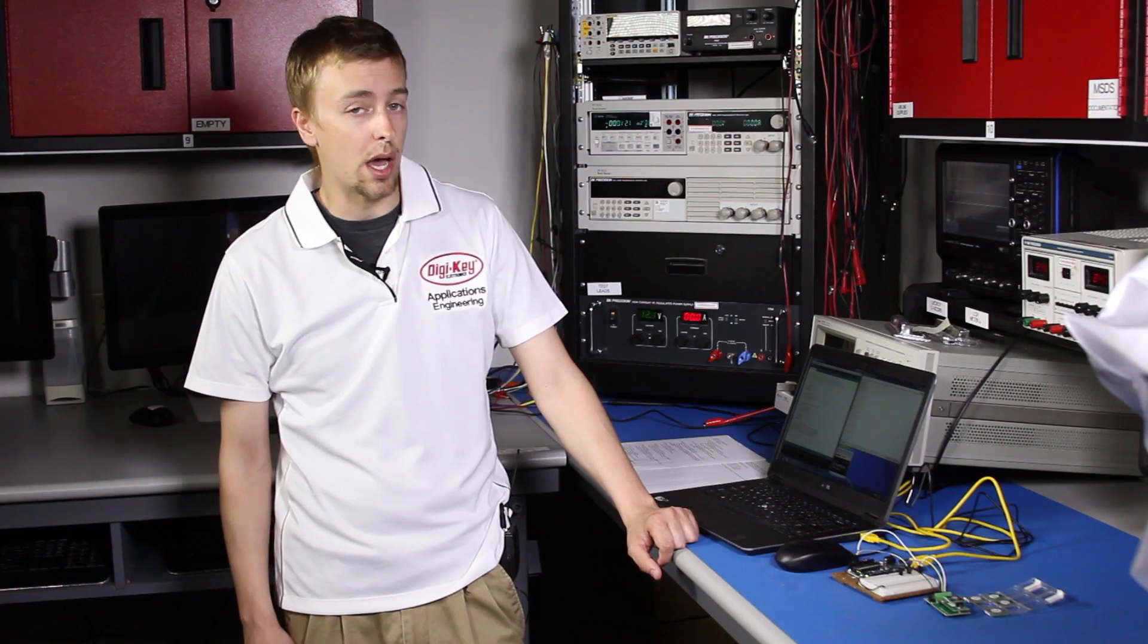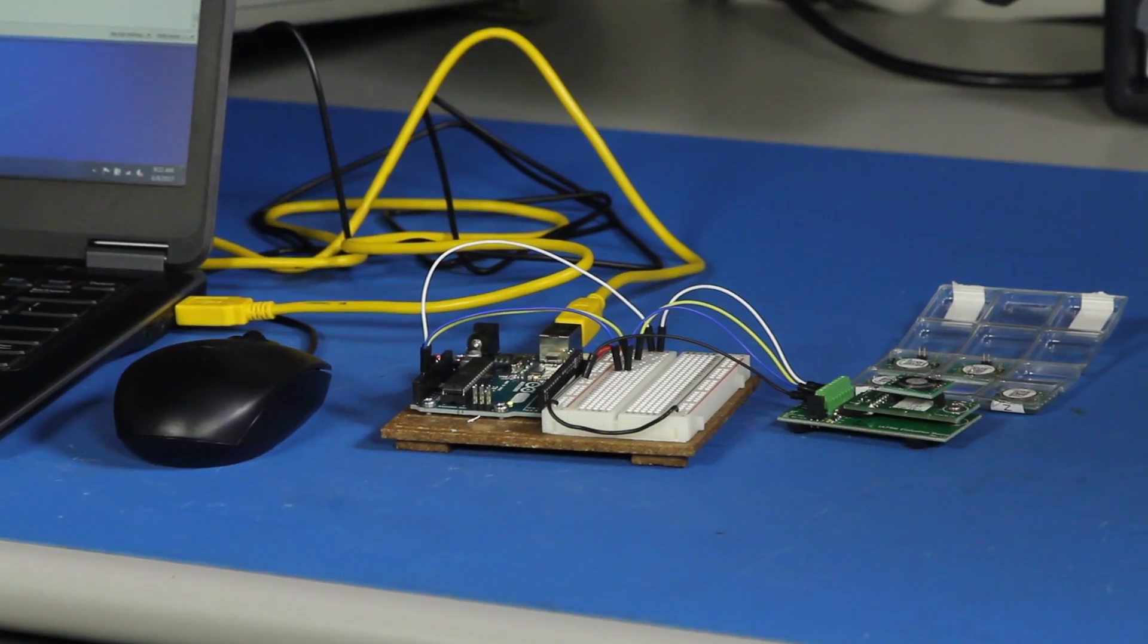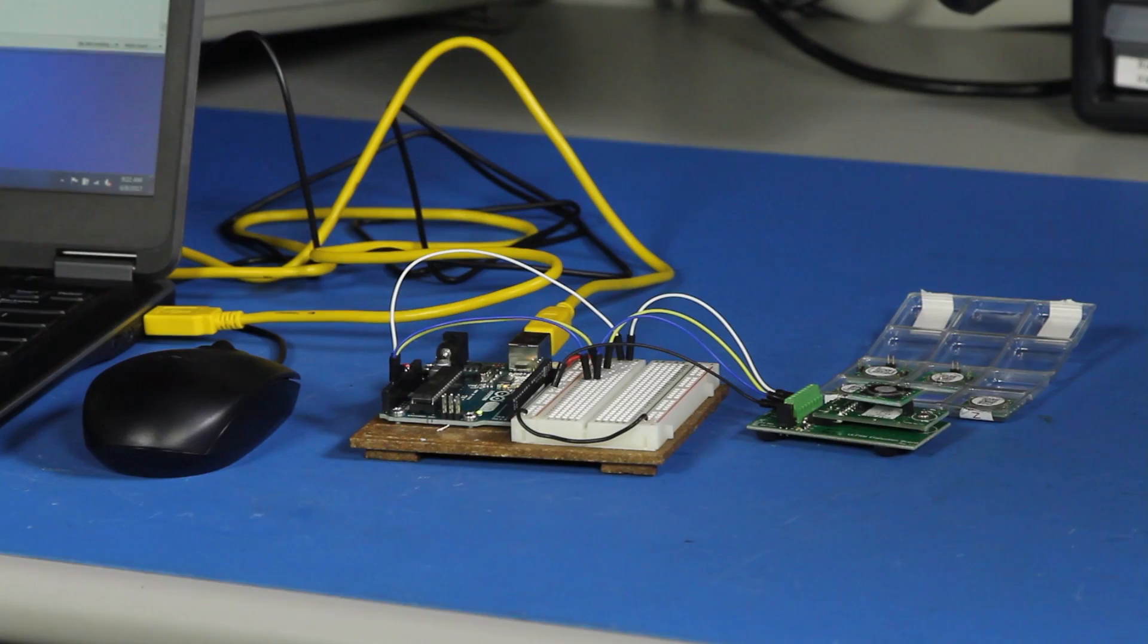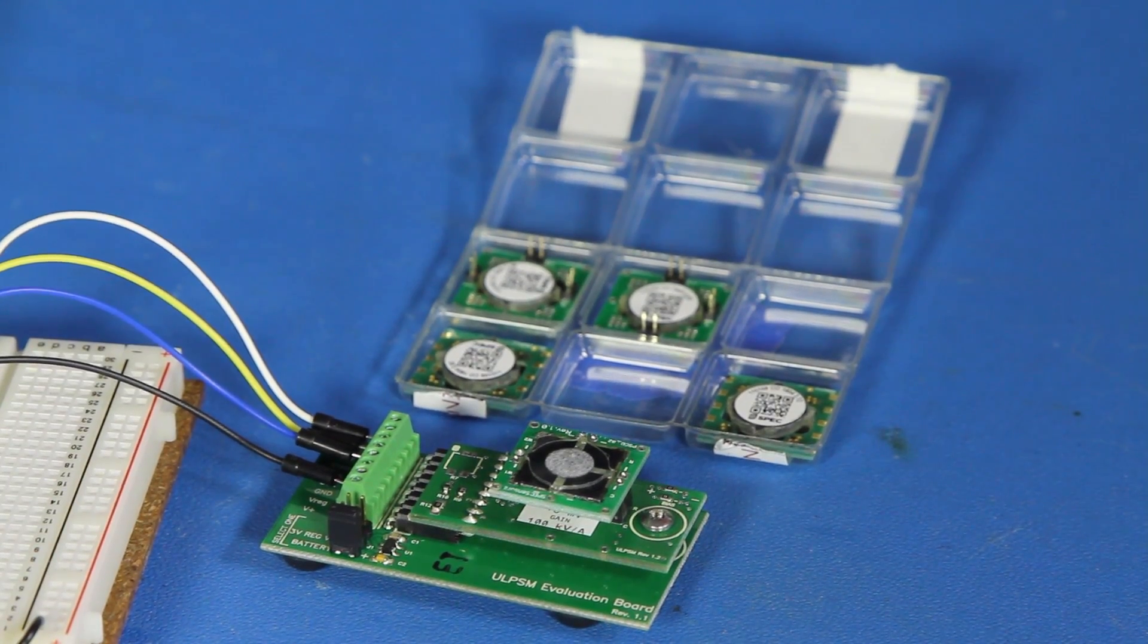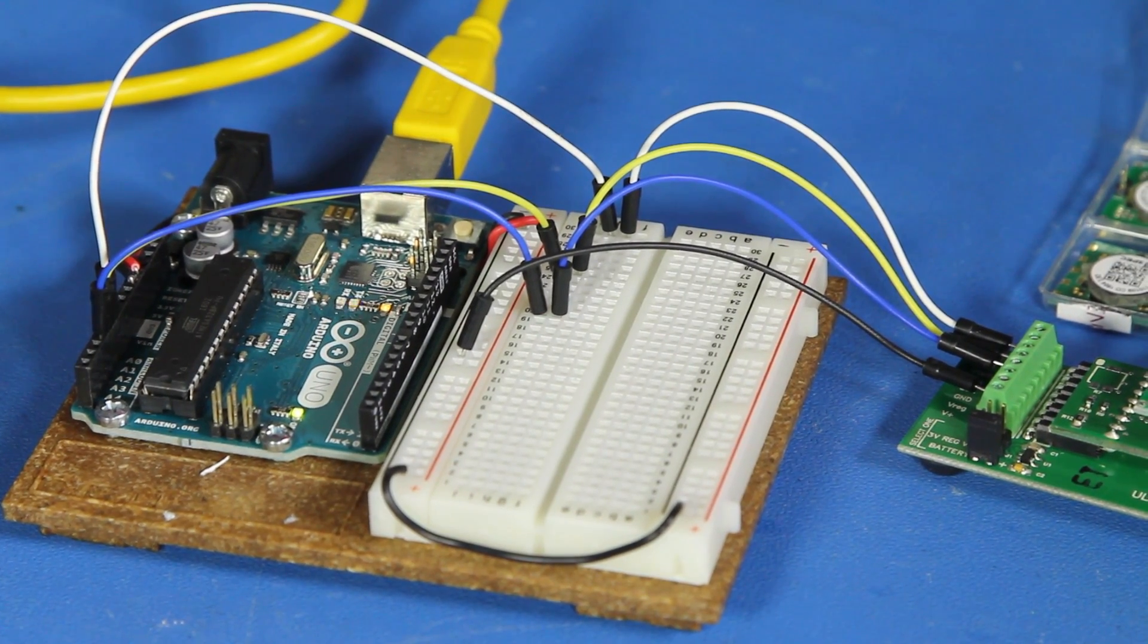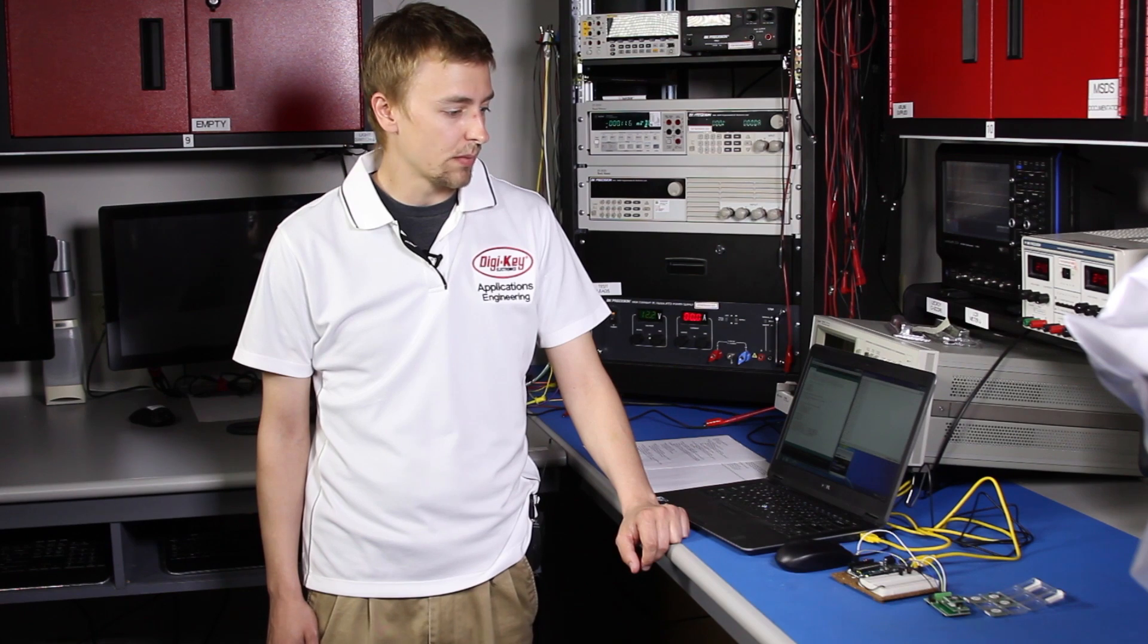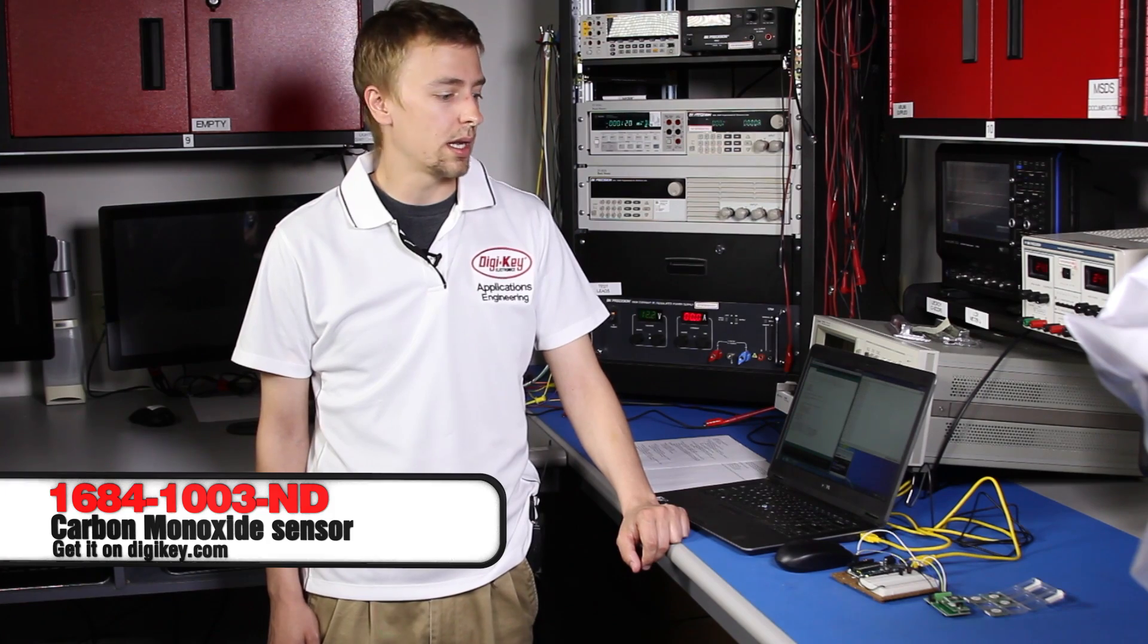You should always have it on because it draws very little power. As far as sensitivity, this device boasts 4.75 plus or minus 2.75 nanoamps per part per million, which is a pretty tight tolerance for a carbon monoxide sensor. That's basically the Spex Sensor carbon monoxide kit in a nutshell.